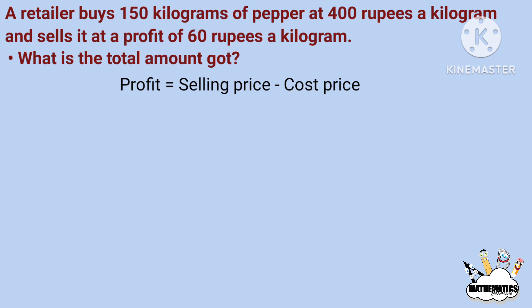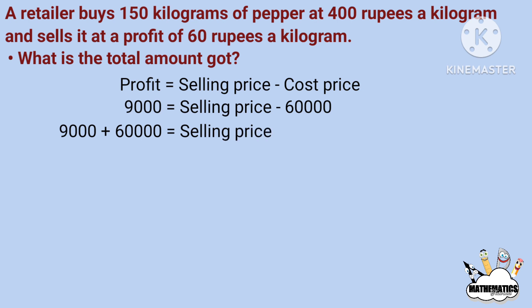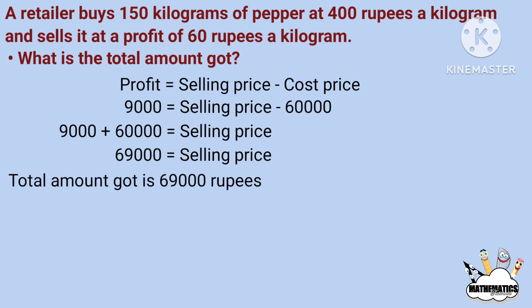Using the formula: profit equals selling price minus cost price. Substituting: 9,000 equals selling price minus 60,000. So selling price equals 9,000 plus 60,000, which is Rs.69,000. The total amount received from the sale is Rs.69,000.